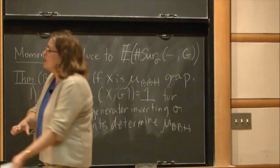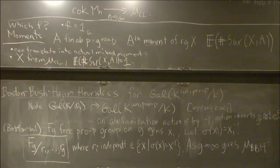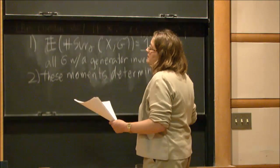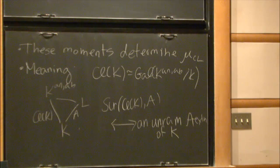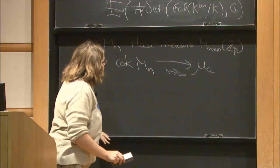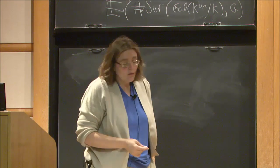Focusing on the moments — the average number of unramified extensions with a given Galois group — the Boston-Bush-Hajir heuristics predict those are all one. A reason to really believe this is that we prove a theorem about class groups in the function field analog. We are still very far from knowing anything like this for number fields in general, but with serious work, modern tools are beginning to make progress on the function field side.